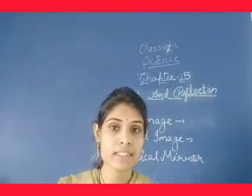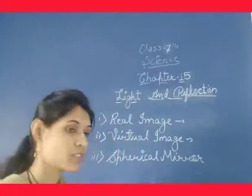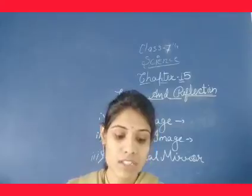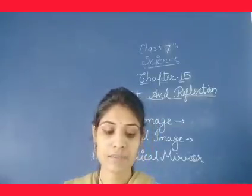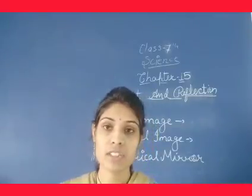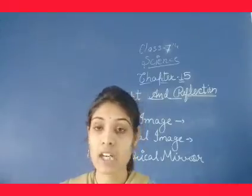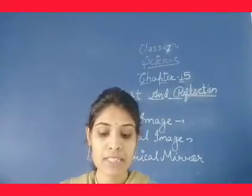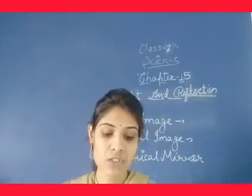Image exists in two forms. First is real image, second is virtual image. Virtual image is produced when the ray of light reaches our eyes but there is no actual object at the apparent source of light.